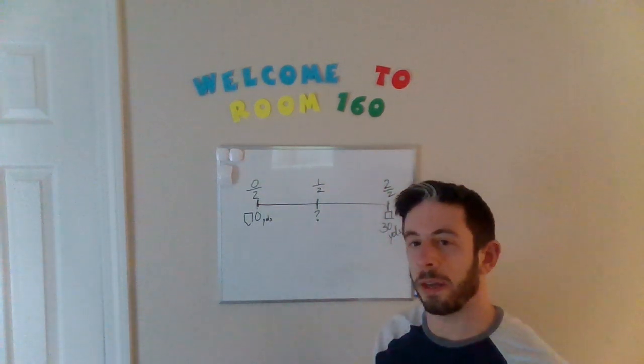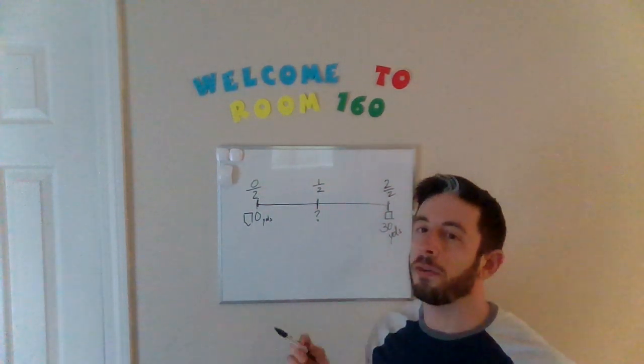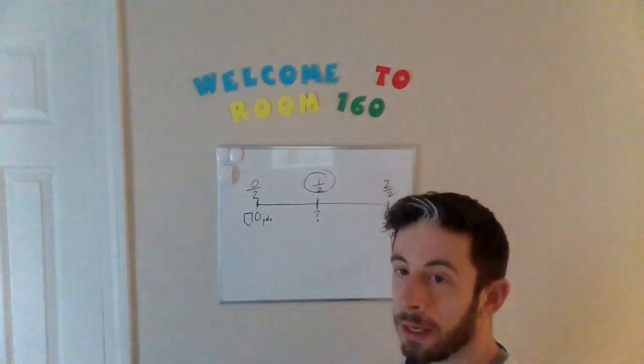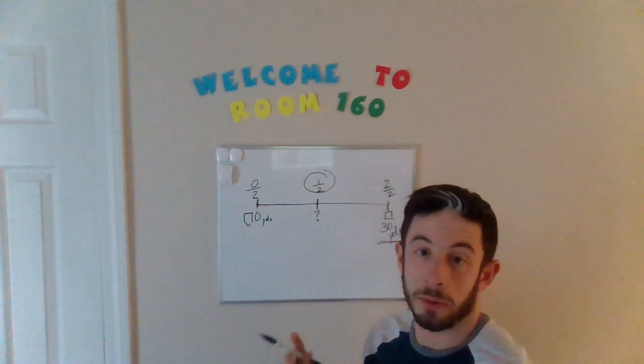So now what we need to do is figure out how far did he travel. Well, if he is halfway there, we need to find what half of 30 is. How do we do that?